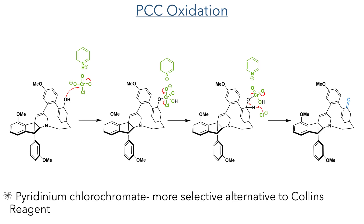Continuing the late-stage oxidation processes, the authors then used a PCC oxidation to oxidise the hydroxyl group to a ketone. Pyridinium chlorochromate acts as a more selective alternative to the Collins reagent; the chromium complex binds to the oxygen making it more electrophilic, and the chloride acts as a base to deprotonate the geminal position, producing the target ketone.